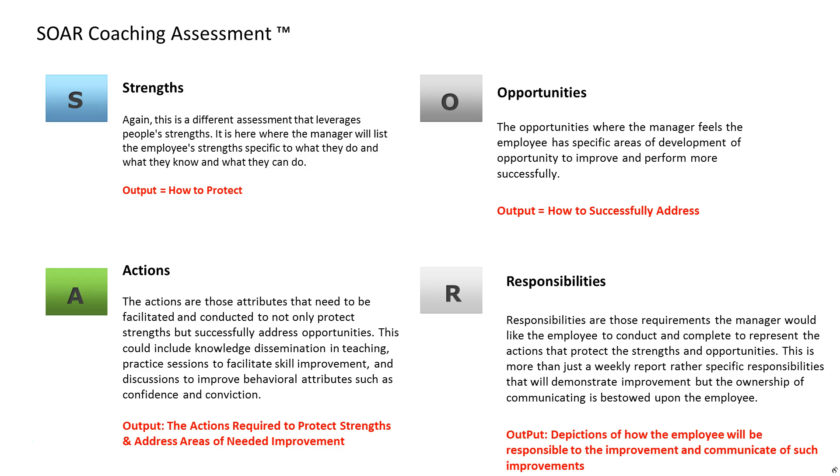Now each one of these areas have very specific business imperatives. Strengths. We want to protect strengths and we still have to coach to strengths even though the employee is exhibiting good things here. Second, opportunities. These are the areas that need to be addressed to facilitate improvement or maybe performance or behavior is lacking.